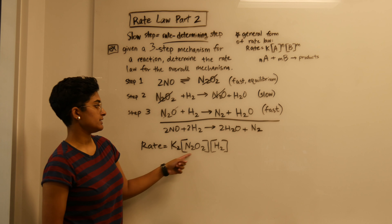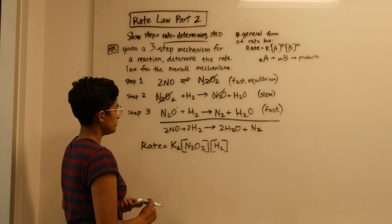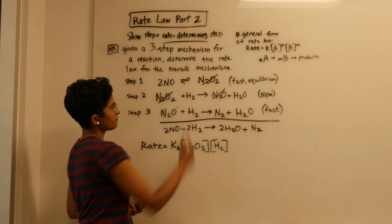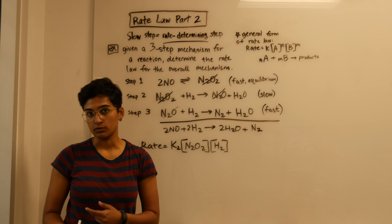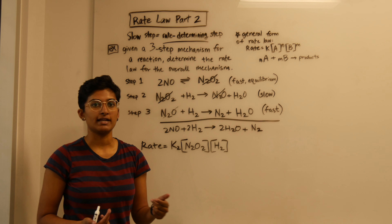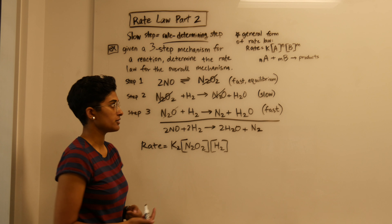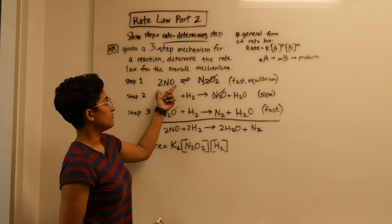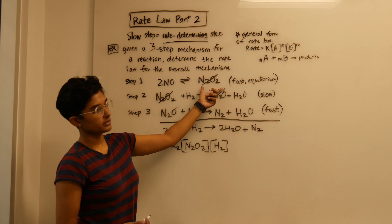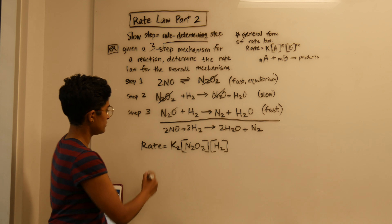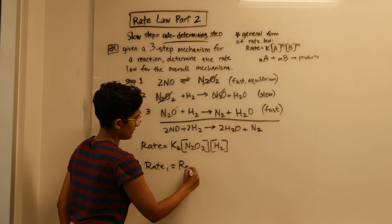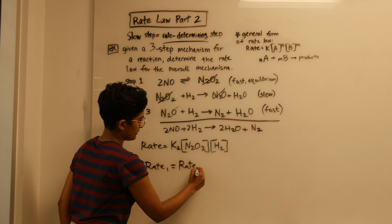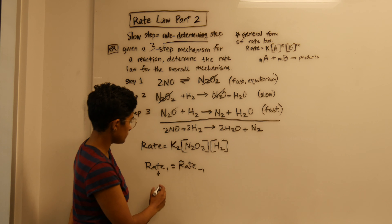We need to use our fast equilibrium step to do some algebra and get N2O2 out of our overall rate law. Being in equilibrium means that the rate of the forward reaction equals the rate of the reverse reaction, so the rate of step one going forward equals the rate of step one in reverse.